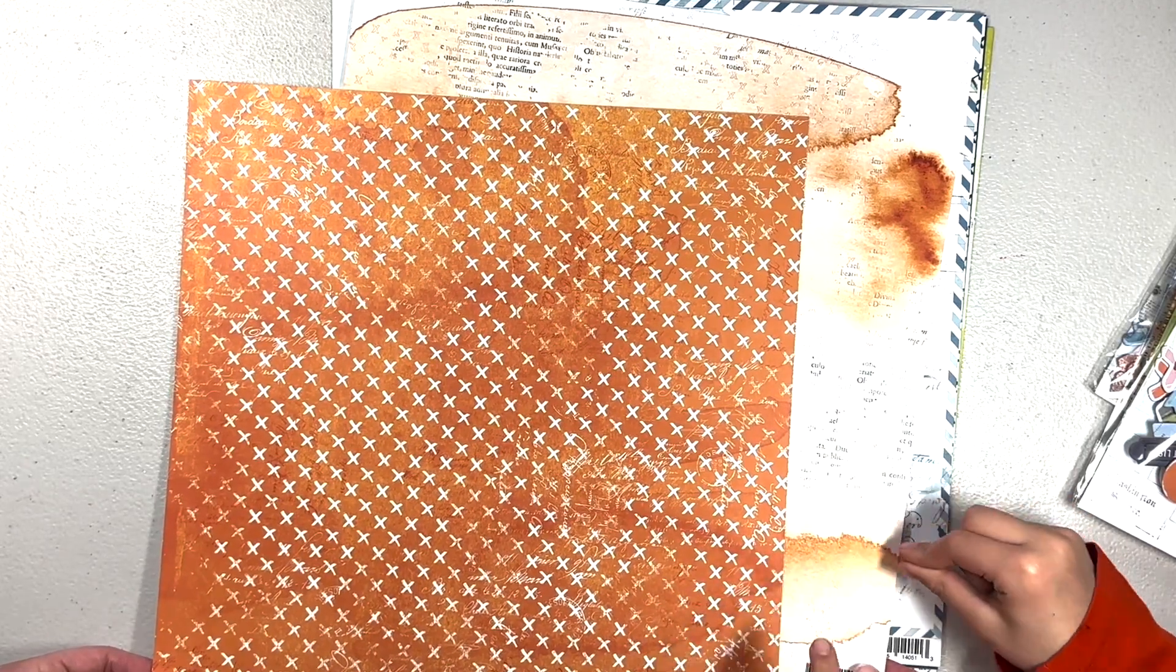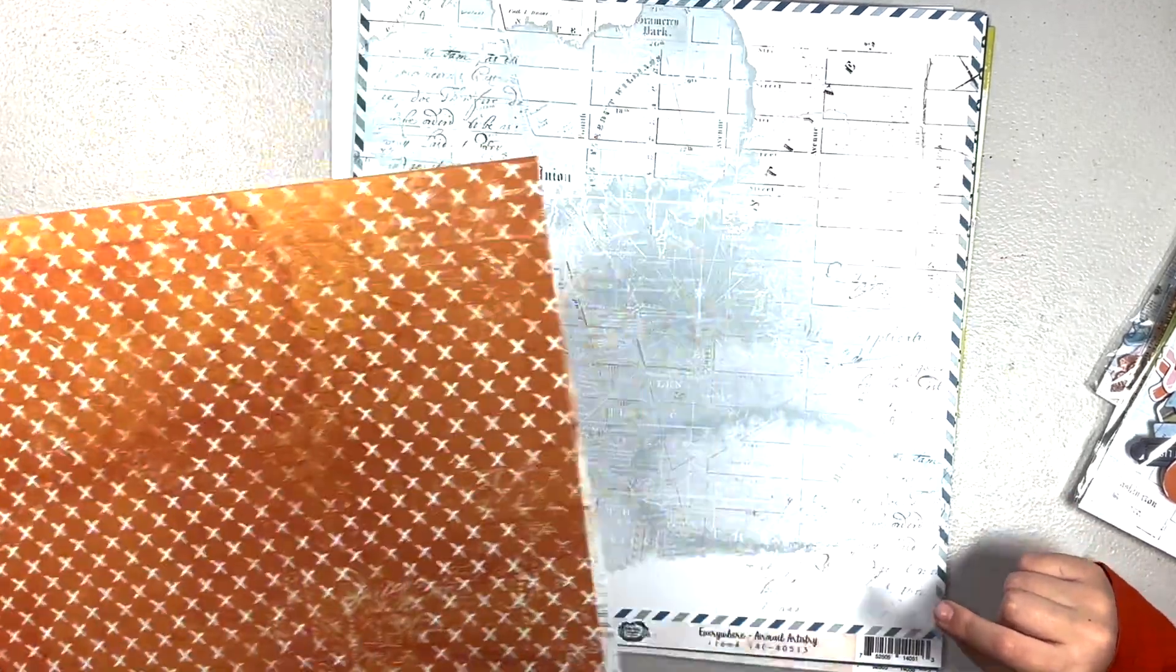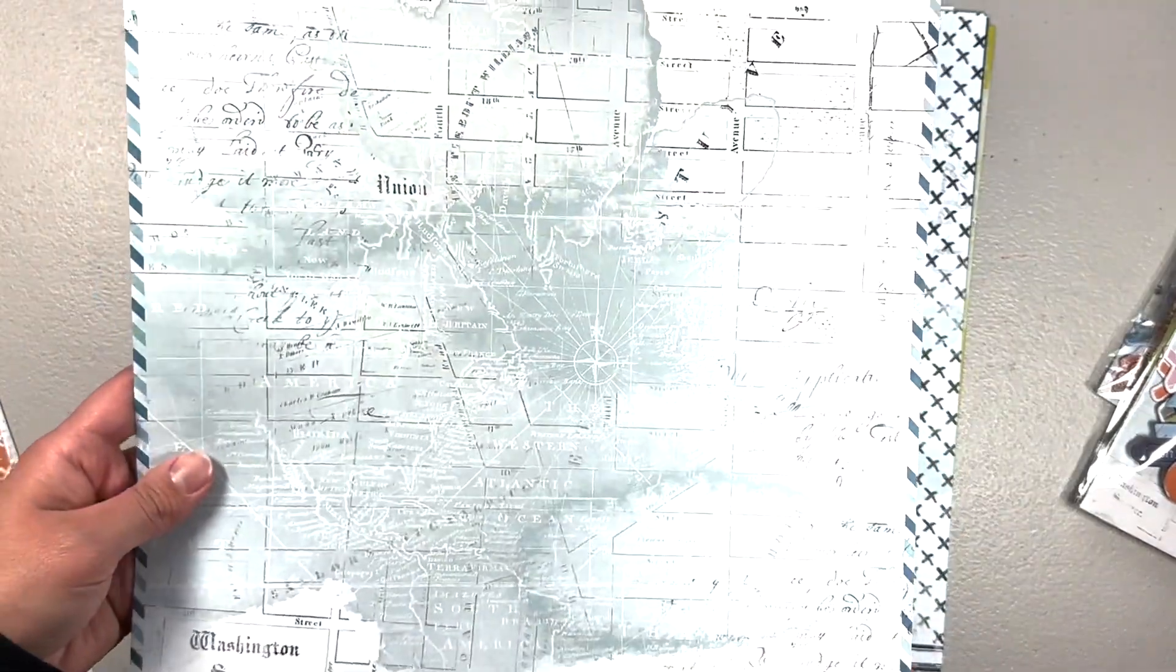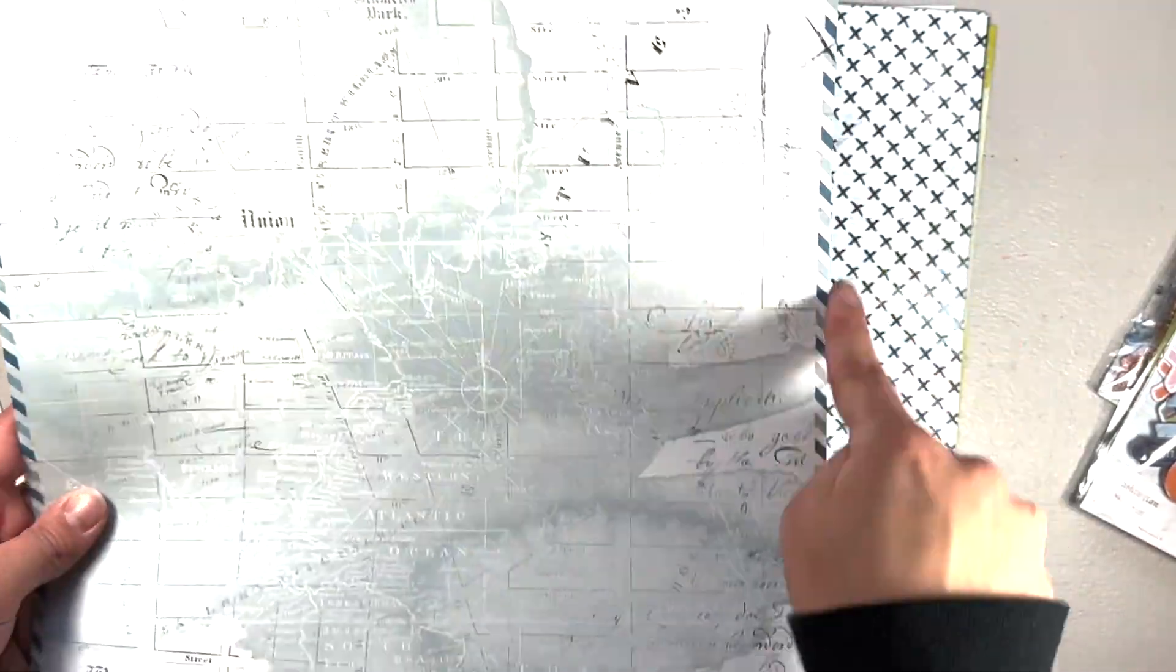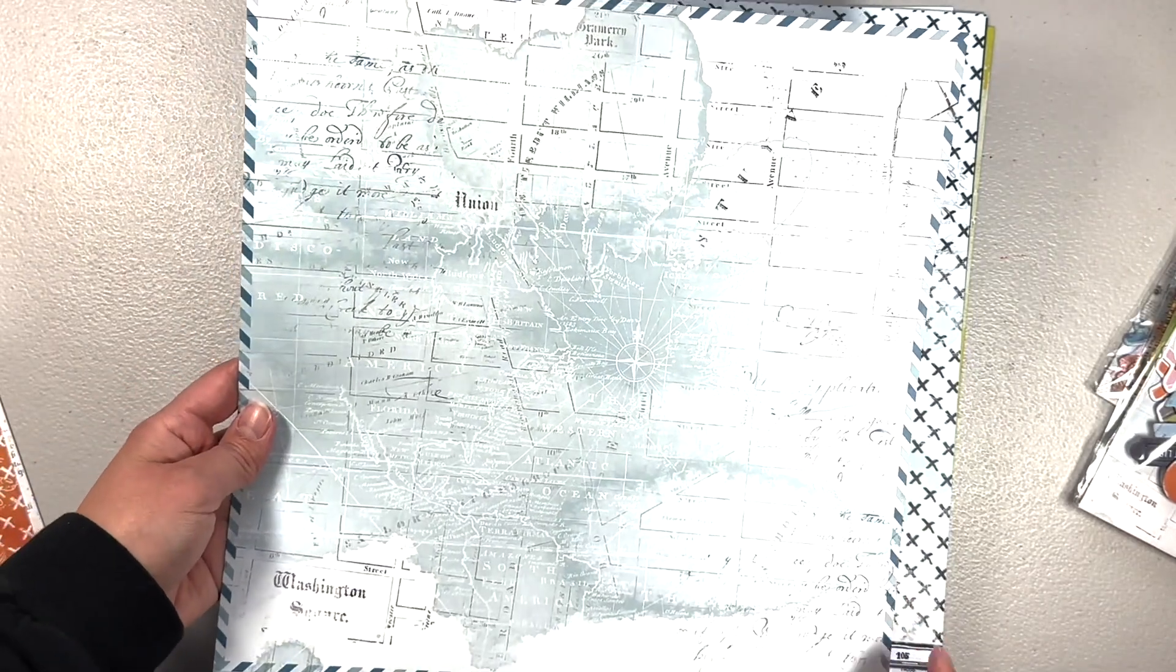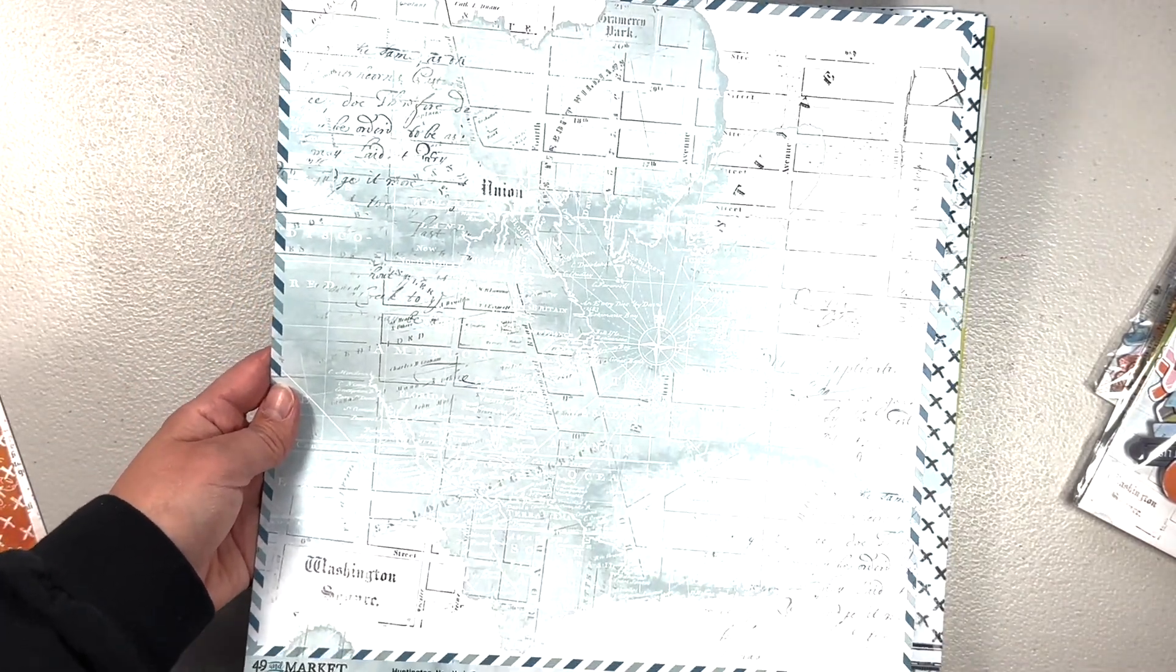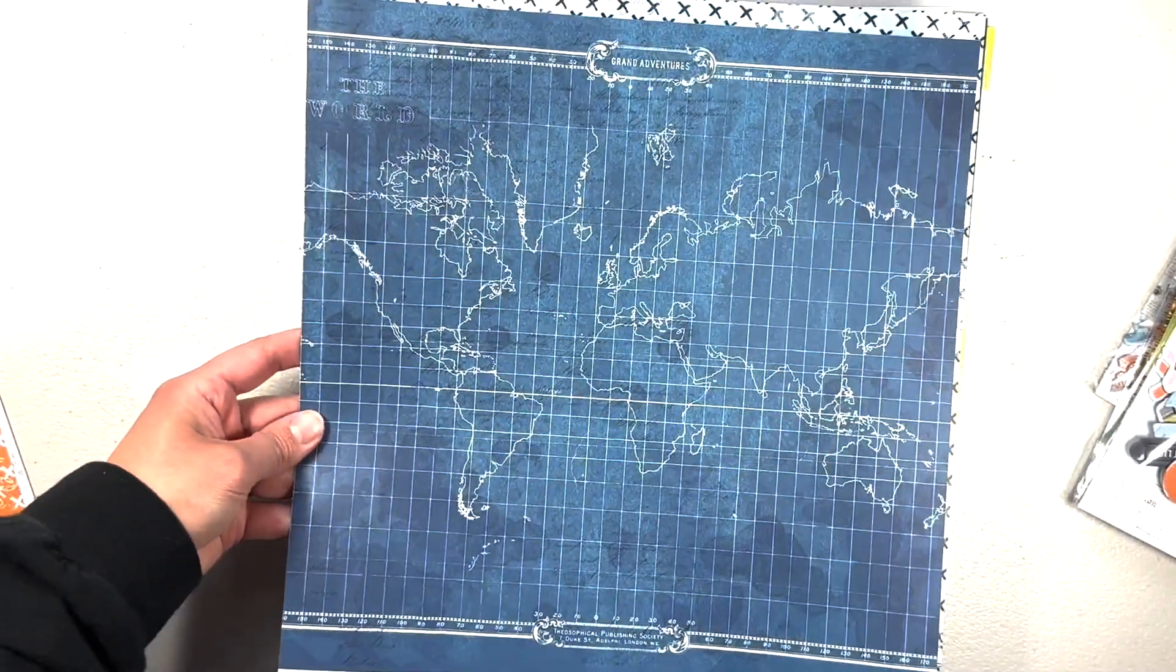This one here is a map with a border around it and diagonal stripes. That is really cool, and a compass in the middle.